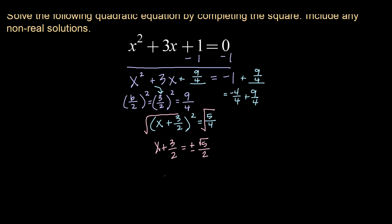Now subtracting that 3 over 2 from both sides we get x equals negative 3 over 2 plus or minus root 5 over 2. Or since they already have a common denominator you could write that as negative 3 plus or minus root 5 over 2.